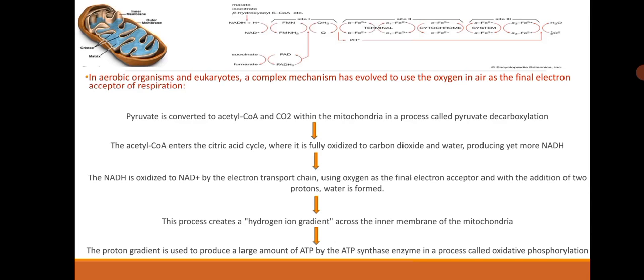In aerobic organisms and eukaryotes, a complex mechanism has evolved to use the oxygen in air as a final electron acceptor for respiration. Pyruvate is converted to acetyl-CoA and CO2 within the mitochondria in a process called pyruvate decarboxylation. The acetyl-CoA enters the citric acid cycle where it is fully oxidized to carbon dioxide and water, producing yet more NADH. The NADH is oxidized to NAD plus by the electron transport chain using oxygen as a final electron acceptor, and with the addition of two protons, water is formed. This process creates a hydrogen ion gradient across the inner membrane of the mitochondria. The proton gradient is used to produce a large amount of ATP by the ATP synthase enzyme in a process called oxidative phosphorylation.